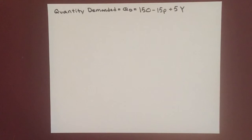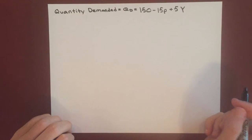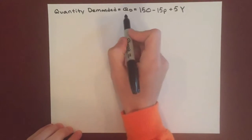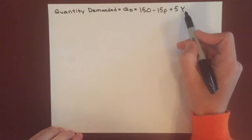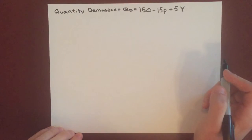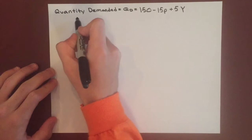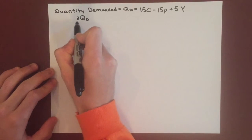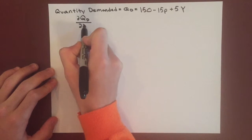So let's say what happens if income increases just slightly. Whenever you have just slightly or increases a small amount, it's going to mean you want to take the partial derivative of quantity demanded with respect to income. So if income increases slightly, we'll take the partial derivative of quantity demanded with respect to income.